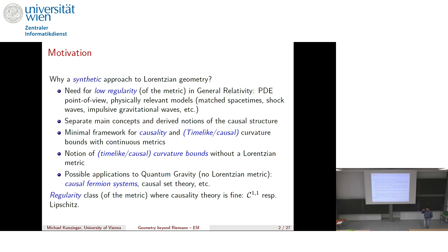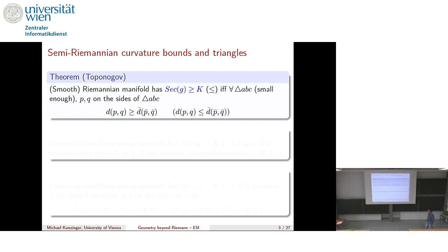From an analytic perspective, the regularity class where everything is still fine is C^{1,1}, where the derivatives are Lipschitz. In that case you still have unique solutions of the geodesic equations, and curvature quantities — which are second derivatives — are L^∞, so you still have bounded curvature. Below that, all bets are off. This provides a motivation for the synthetic sectional curvature definitions I will show you later on.